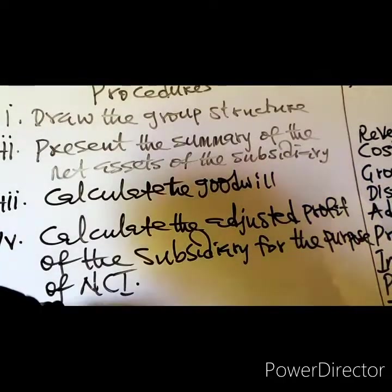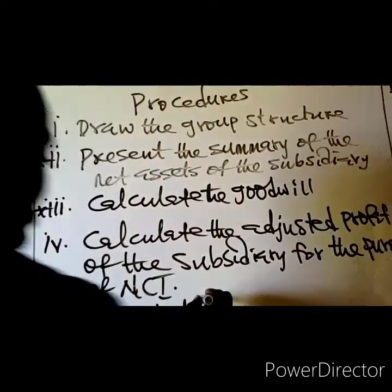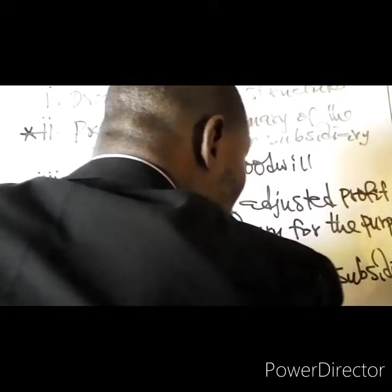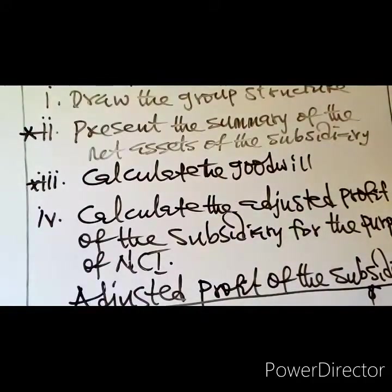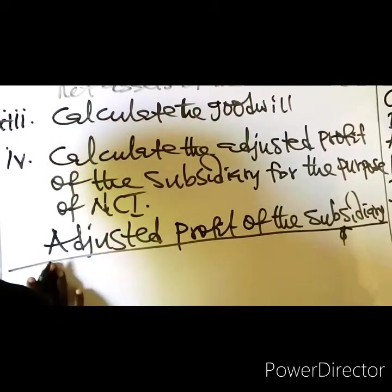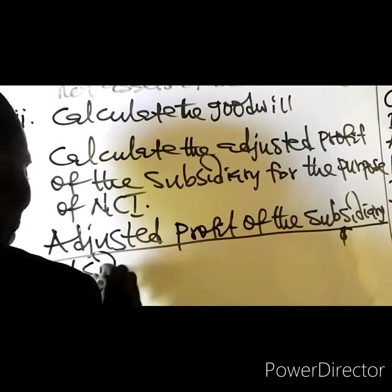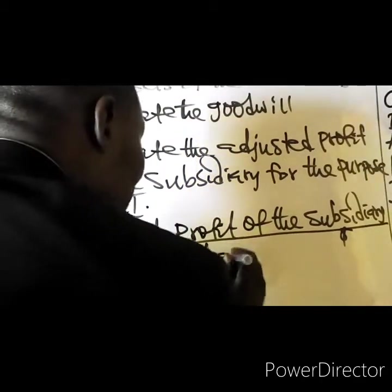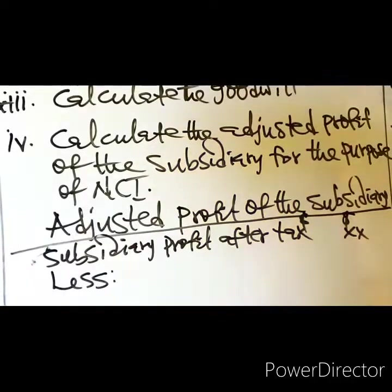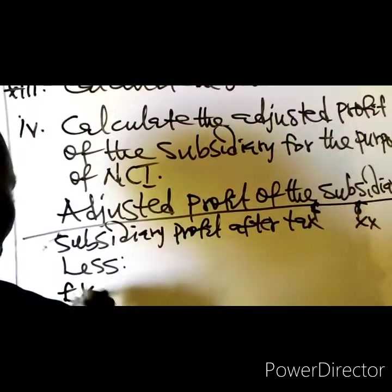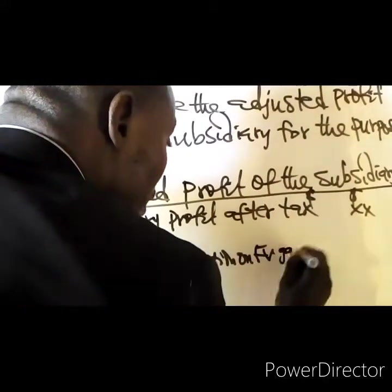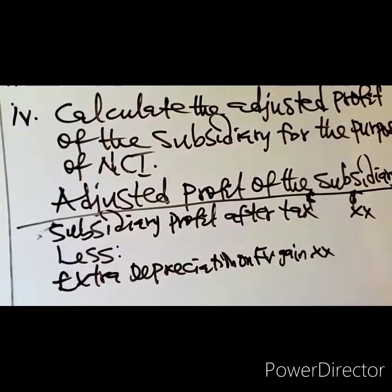How will you calculate the adjusted profit of the subsidiary? You start with the subsidiary's profit after tax. Then less the following items: number one, extra depreciation on fair value gain.